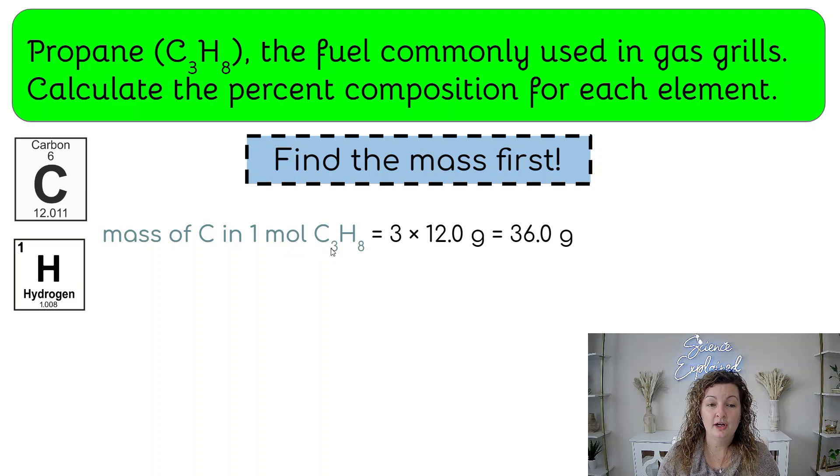So here's carbon. We have in one mole of this, we're going to times it by three because we have three carbon going on. And what are we timesing it by? Our mass off the periodic table, 12. Go ahead and round. That's perfectly fine. And you end up getting 36 grams.